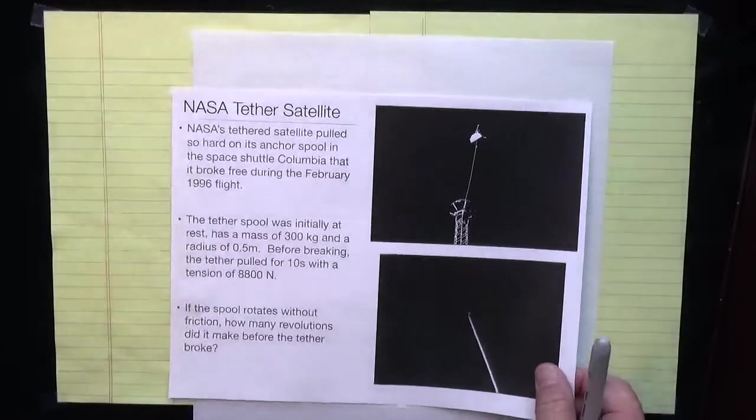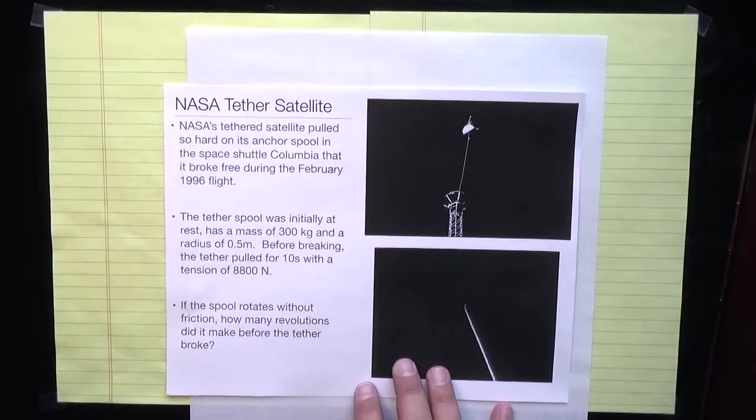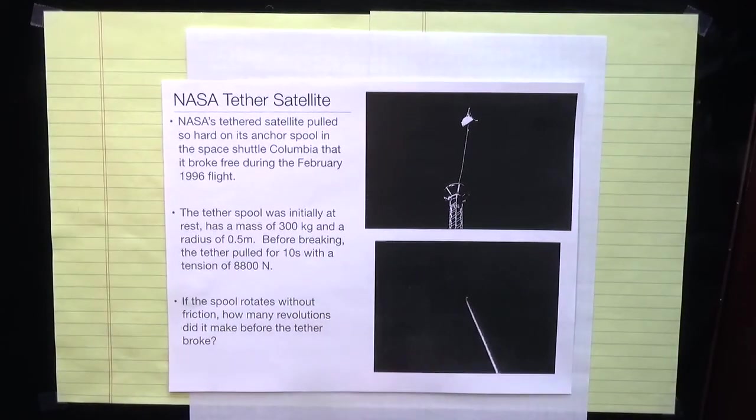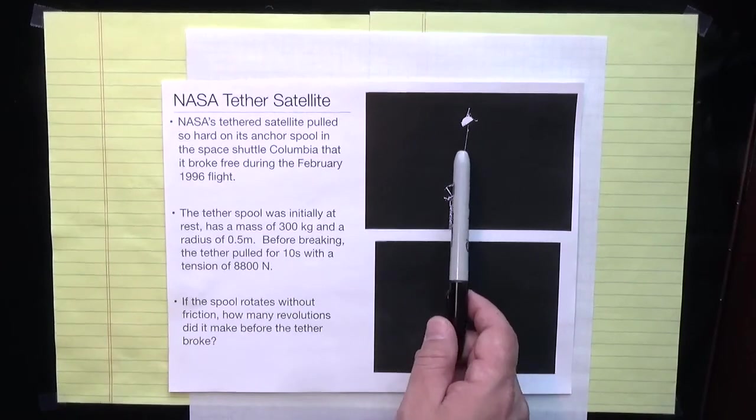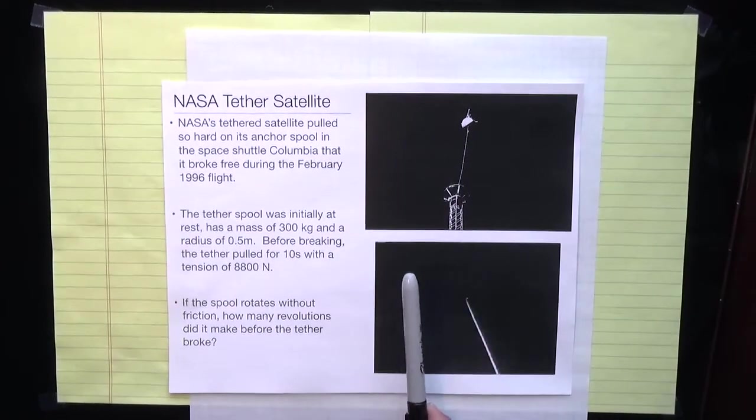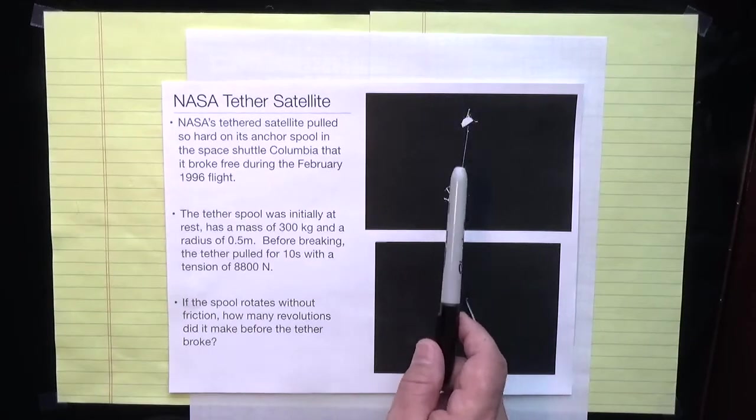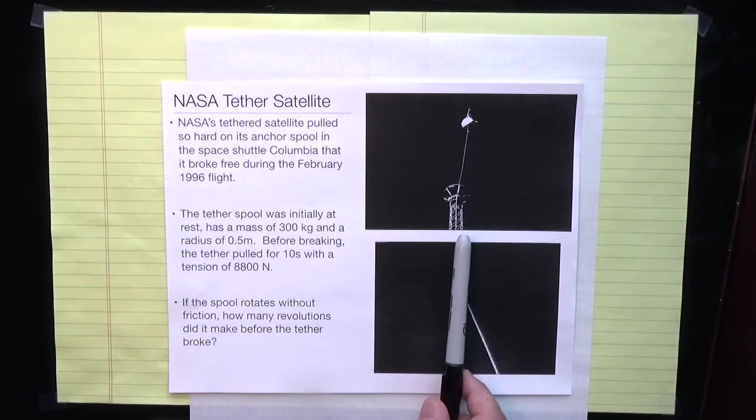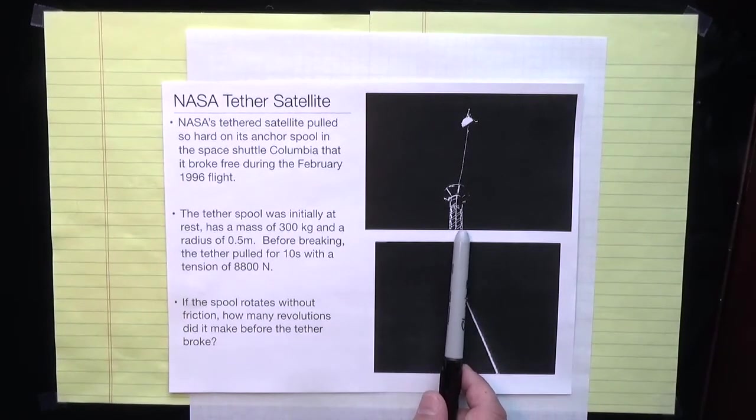Let's do an example where we have to think about torques and then connect those torques to angular rotation and kinematics. So in 1996 on the Space Shuttle Columbia, NASA was testing the idea of flying a tethered satellite. They would spool this satellite out on a very long cable.